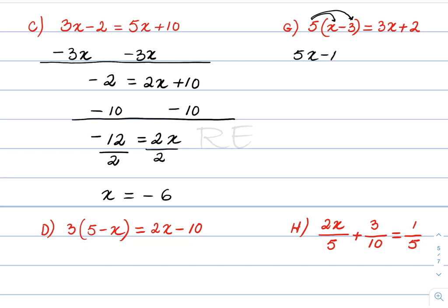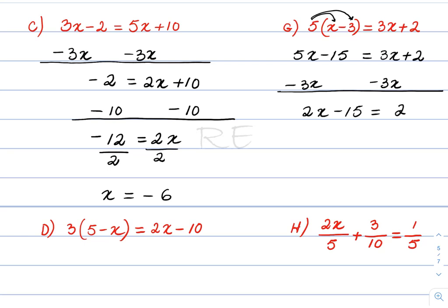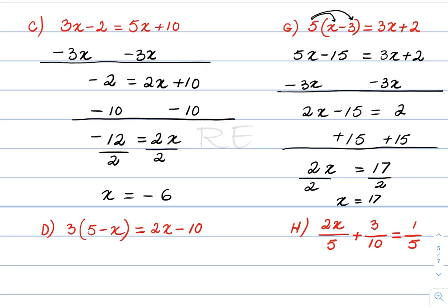We distribute 5 to 2x and negative 3, giving 10x minus 15, and we have 3x plus 2. We subtract 3x from both sides, giving 2x minus 15 is equal to 2. Adding 15 to both sides, 2x is equal to 17. Dividing both sides by 2, x is equal to 17 over 2.